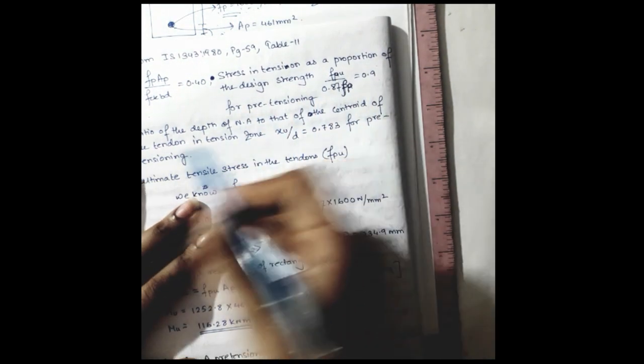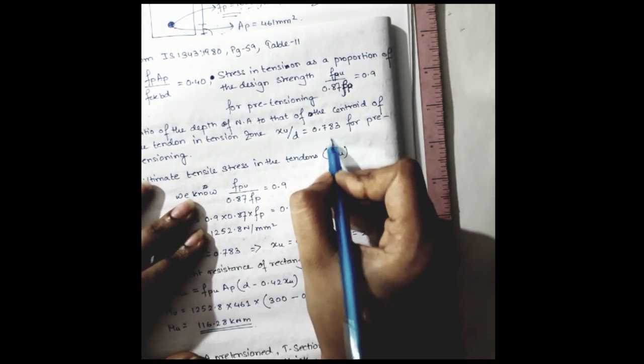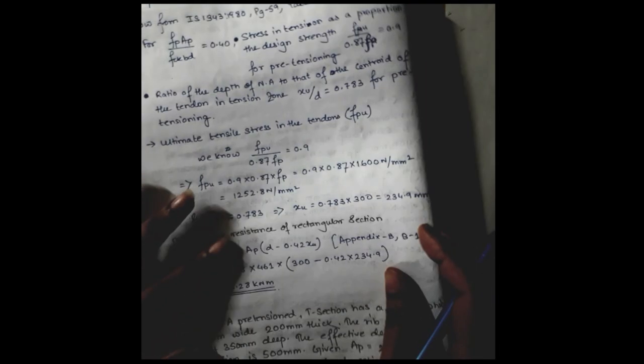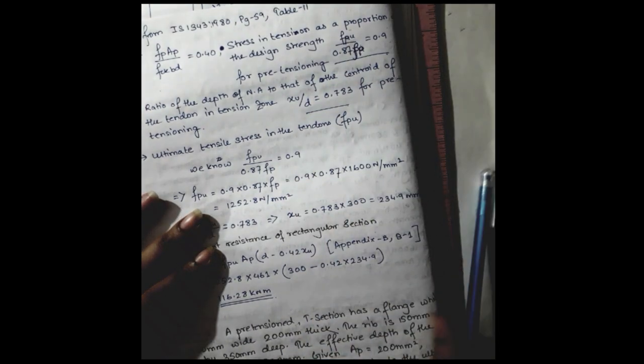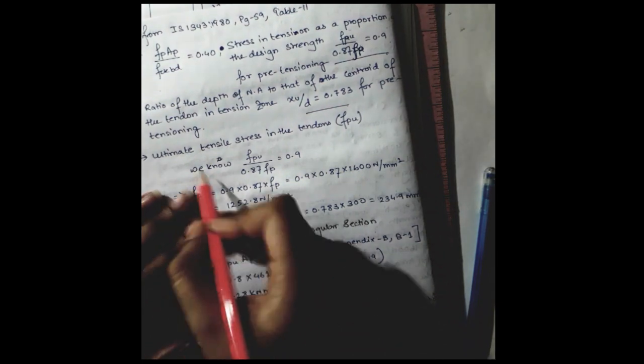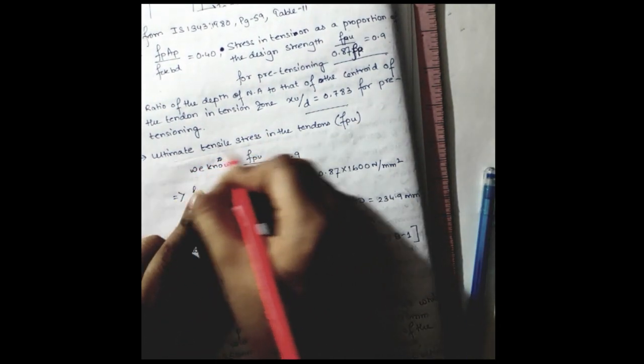So stress in tension as a proportion of the design strength will be equal to 0.94 for pre-tensioning, and the ratio of the depth of neutral axis will be 0.783 for pre-tensioning. So we have got this equation and this equation, and knowing this equation, we will calculate the ultimate tensile stress of tendon, which is FPU.